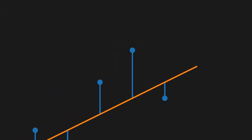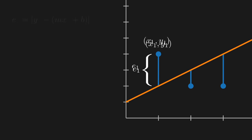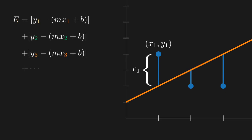So we can write the error for the first data point as the difference between the point and the line's y values. If we want to define how close the line is to the entire data set, we must account for the error of each individual data point. So we'll include the error for point 2, point 3, and so on.